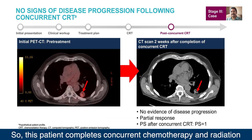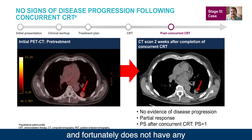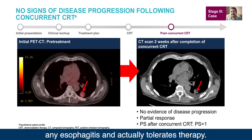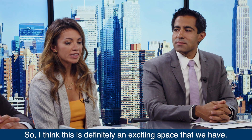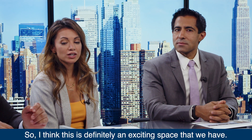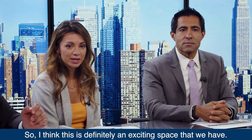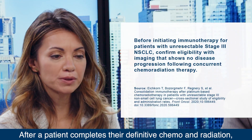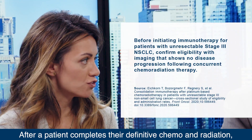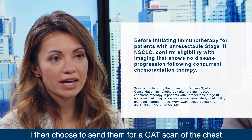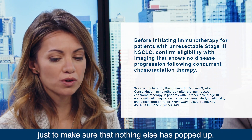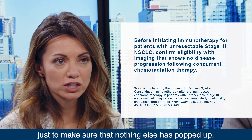So this patient completes concurrent chemotherapy and radiation and, fortunately, does not have any esophagitis and actually tolerates therapy. Dr. Brichel, what are you doing for this patient? After a patient completes their definitive chemo and radiation, I then choose to send them for a CAT scan of the chest just to make sure that nothing else has popped up.